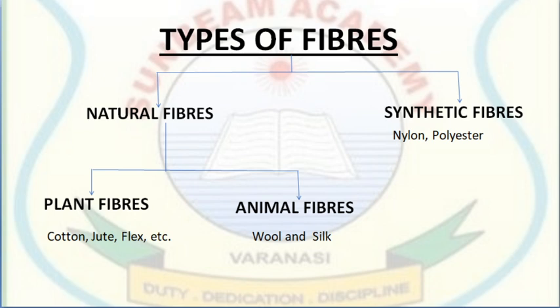The second type is animal fibers, simply obtained from certain animals. Wool and silk are the two common examples. Wool comes mainly from the fleece of sheep, and also from goat, yak, camel and rabbit — these are known as wool-yielding animals. Silk is produced by cocoon-spinning silkworms. Animal fibers are made up of proteins, whereas plant fibers are made up of cellulose.